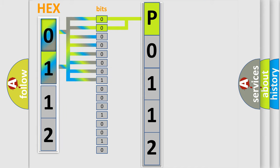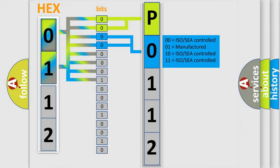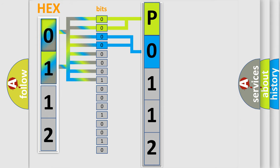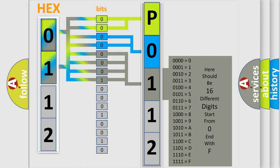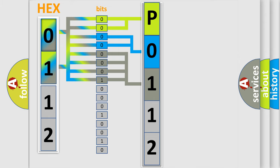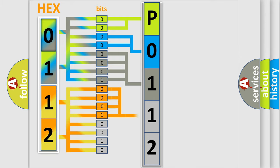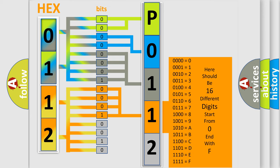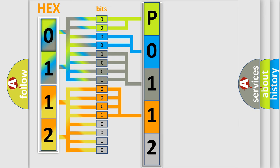The next two bits again determine the second character. The last four bits of the first byte define the third character of the code. The second byte is composed of a combination of eight bits. The first four bits determine the fourth character of the code, and the combination of the last four bits defines the fifth character.